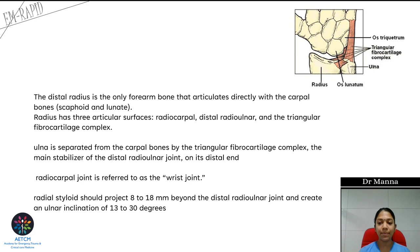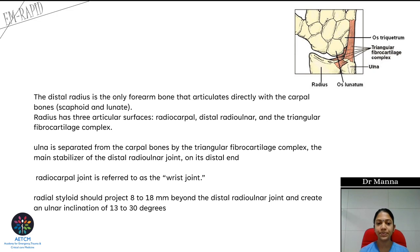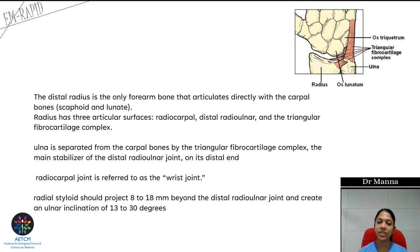The ulna is separated from the carpal bones by the triangular fibrocartilage complex. So the wrist joint is the radiocarpal joint. When we look at the wrist joint, the radial styloid projects approximately 8 to 18 mm beyond the ulnar styloid, and the distal end of the radius is inclined 13 to 30 degrees toward the ulna.